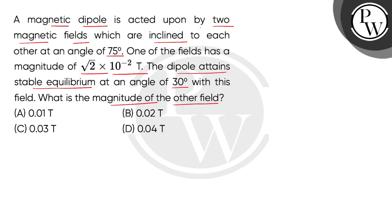Given that we have two magnetic fields. Suppose this is the first magnetic field B1 and this is the second magnetic field B2, and both magnetic fields are inclined to each other at 75 degrees.